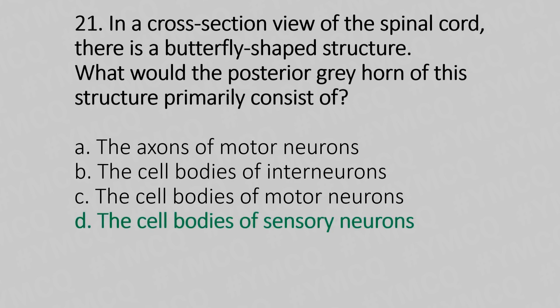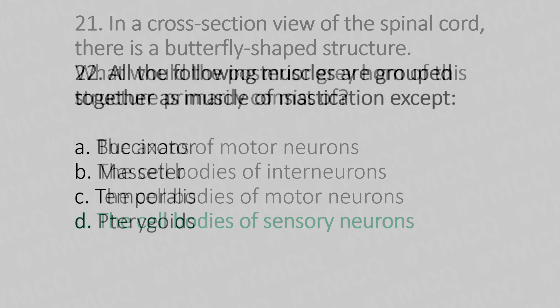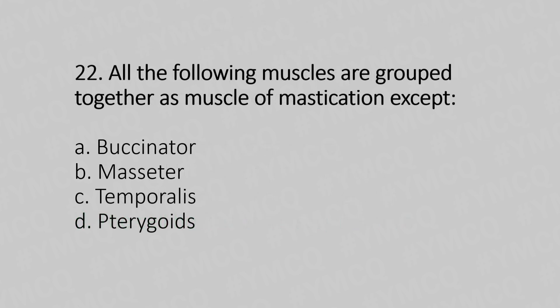Now let's move to question number 22. All the following muscles are grouped together as muscles of mastication, except: Option A: buccinator. Option B: masseter. Option C: temporalis. Option D: pterygoids. And the answer is Option A — buccinator.